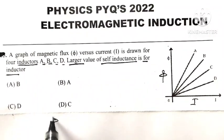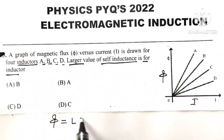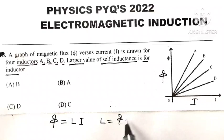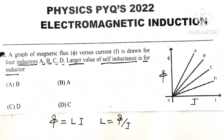We know that flux associated with inductor phi is equal to L into I, or L is equal to phi divided by I.